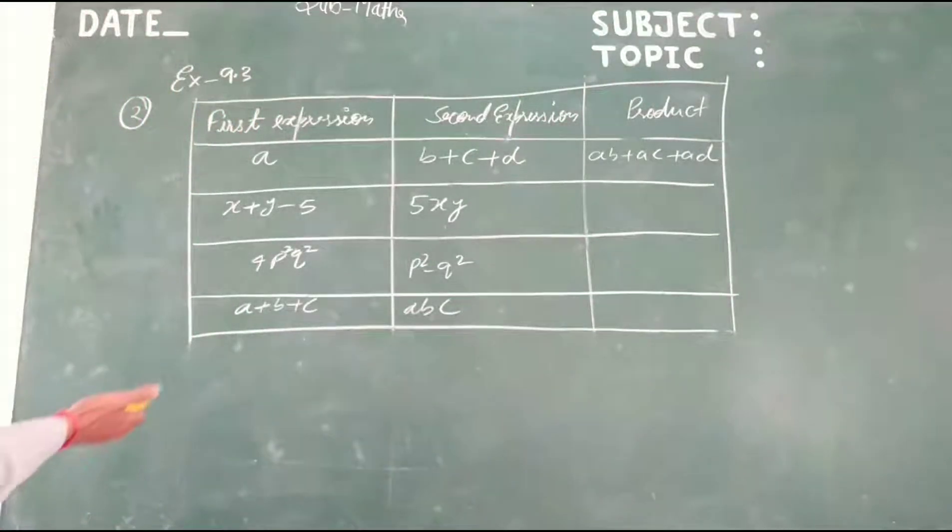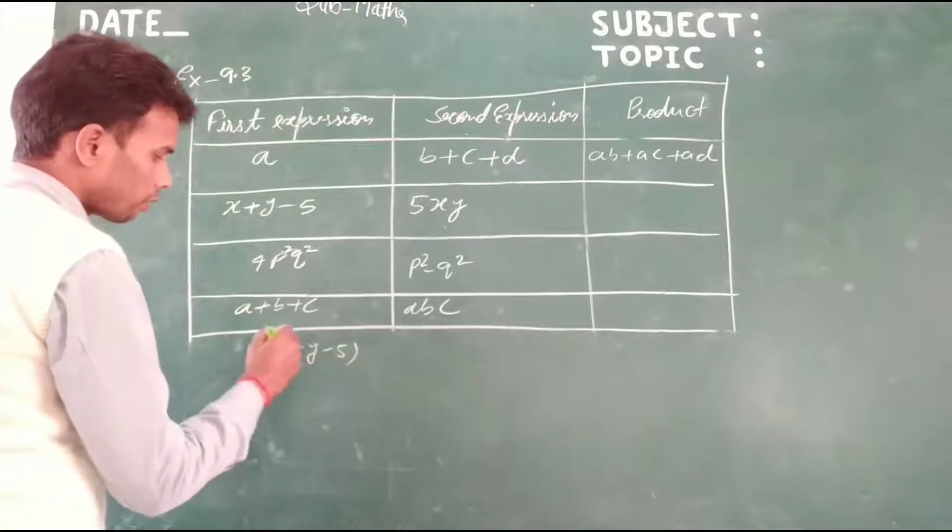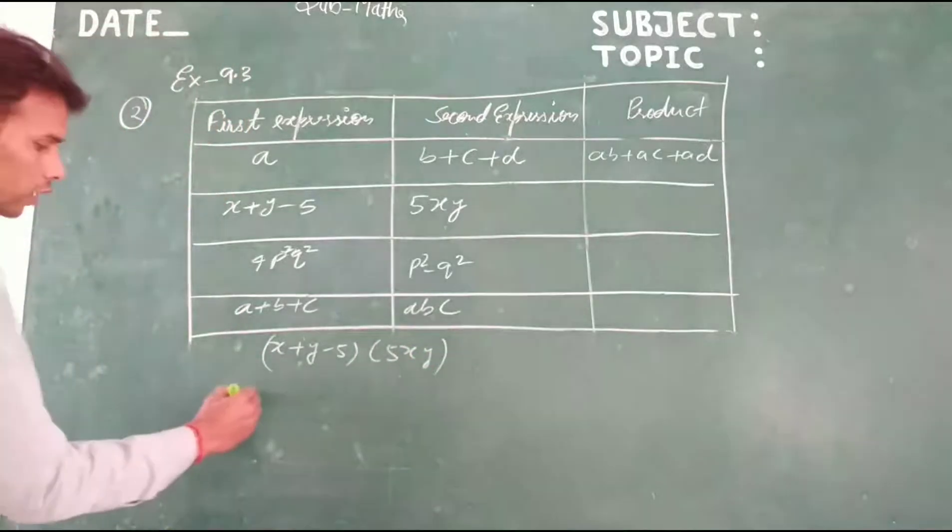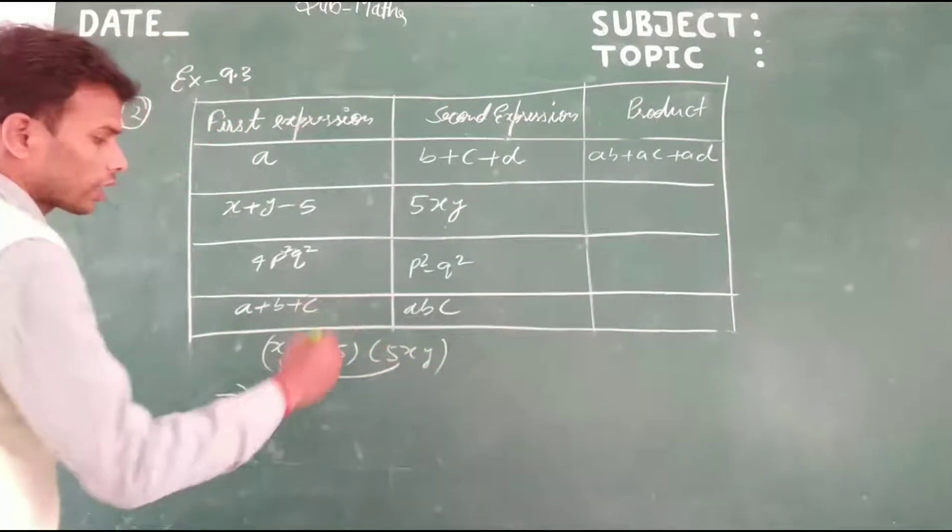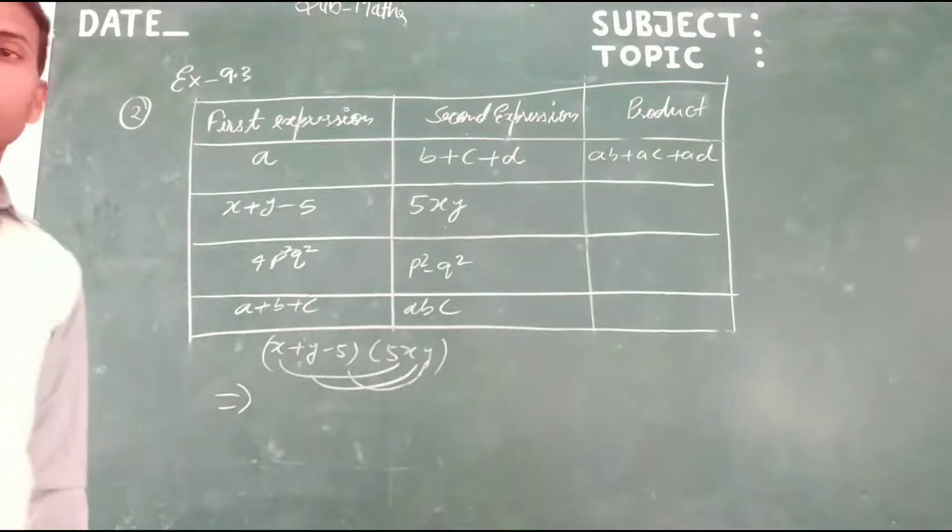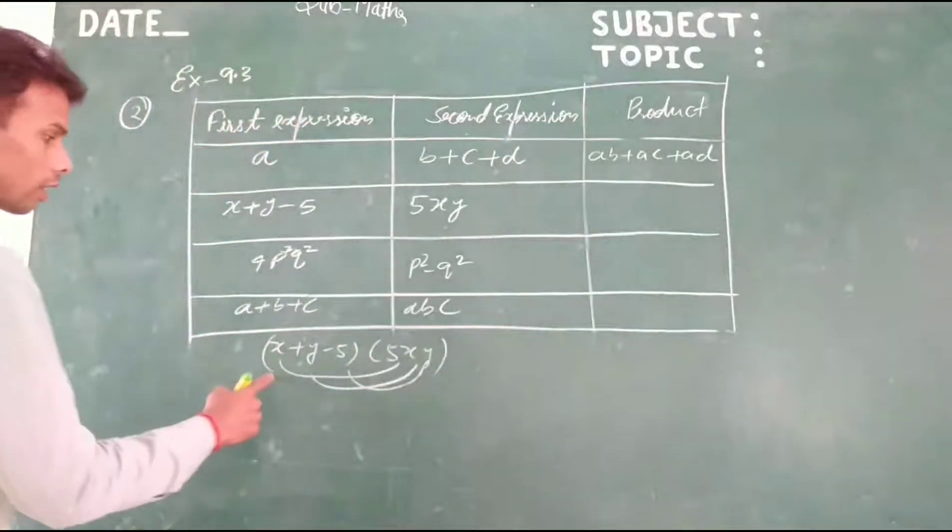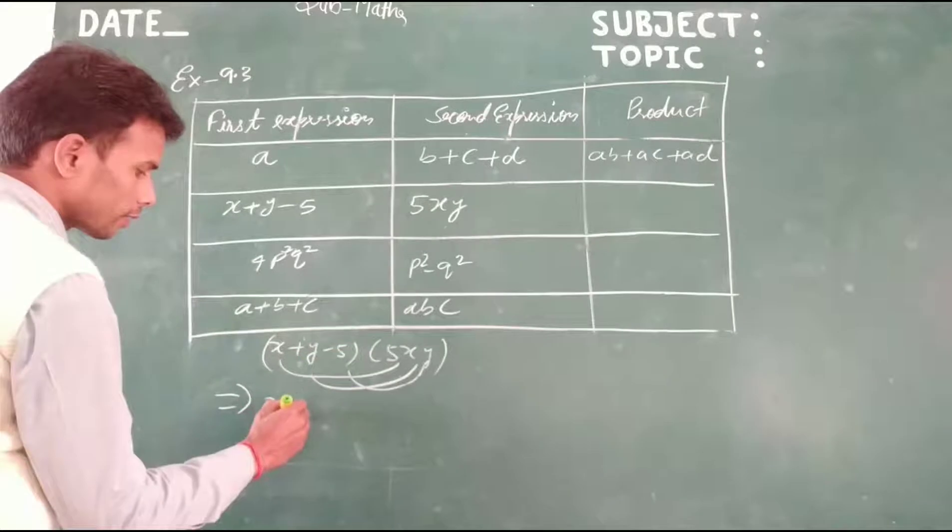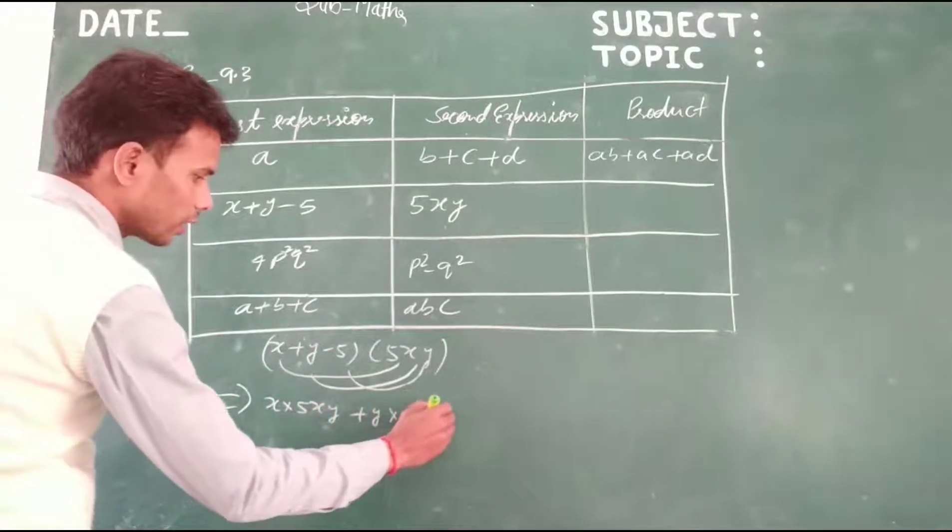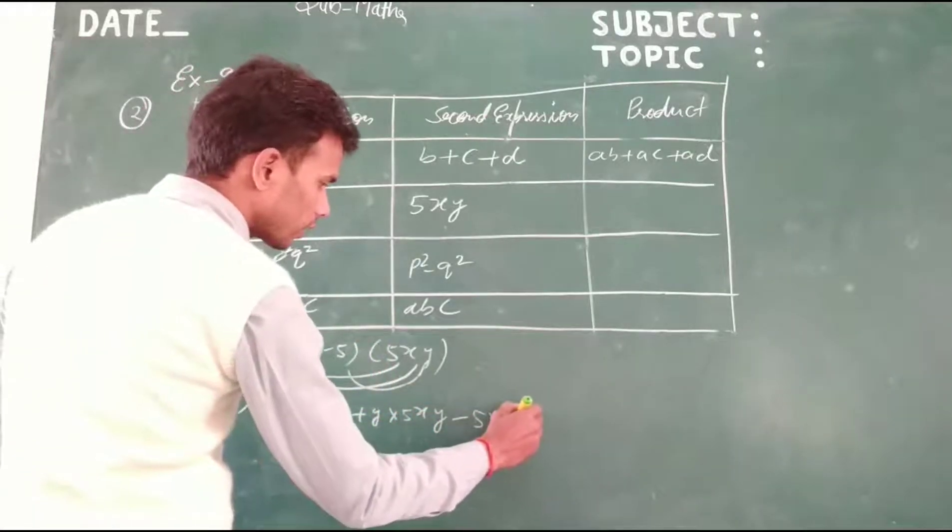Now we check another question. Here given X plus Y minus 5, bracket, 5XY. We have to find out the product. First term to first term, second term to first term, third term to second term. If the bases are same, then powers will be added. If the bases are different, then we write directly. X multiply 5XY plus Y multiply 5XY minus 5 times 5XY.